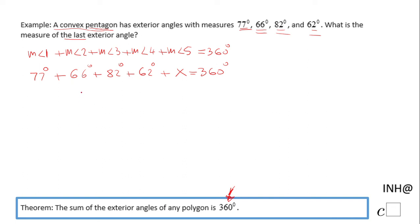287 plus x equals 360. We're going to need to subtract 287, and we have x equals 360 minus 287, that will be 73°.